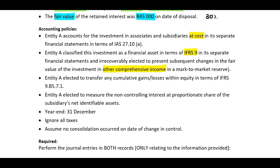Entity A elected to transfer any cumulative gains or losses in terms of IFRS 9 — this will be applicable when they sell. Entity A elected to measure non-controlling interest at proportionate share. Year end is 31 December. Ignore all taxes and assume no consolidation occurred on date of change. Perform journal entries in both records only relating to the information provided.